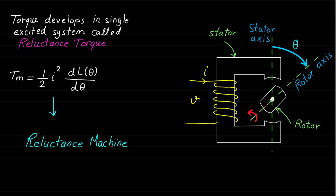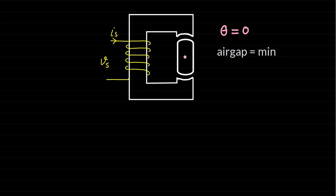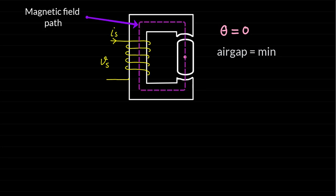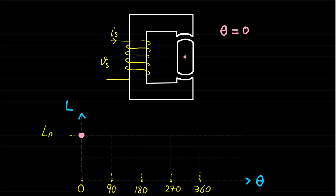Since inductance variation is very important in developing torque, let's show how this self-inductance changes with respect to rotor position. The angle theta represents the angle between the rotor and stator magnetic field axes. If the rotor is at the vertical position, theta equals zero. At this position, the air gap seen by the magnetic field path is minimum, the reluctance is minimum, and therefore the inductance is maximum, denoted by Lmax. Let's map this maximum inductance value on the inductance versus angle plot.